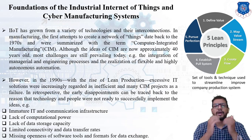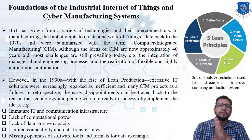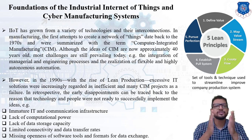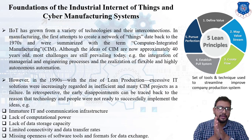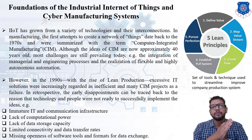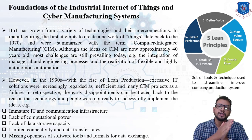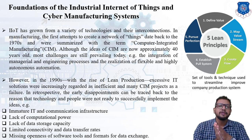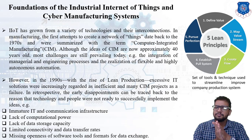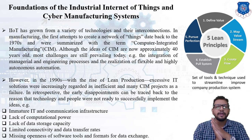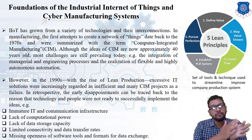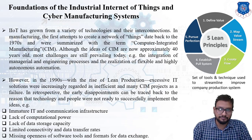Let us begin with Industry 1.0. During Industry 1.0, we transferred from hand production to machine production, making use of machines powered by steam and water — that is, steam engines and steam turbines. That was the revolution of Industry 1.0.